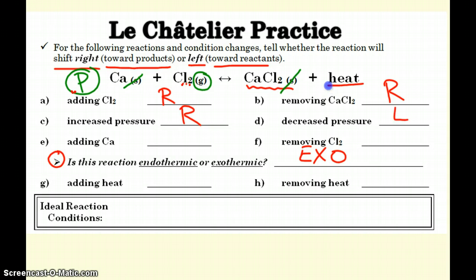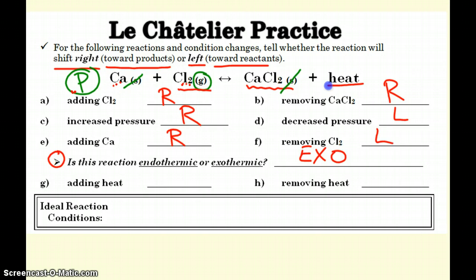Decreasing the pressure has the opposite effect — it's going to shift to the left, because if I take the pressure away, the reaction is going to shift back to the left-hand side to replace it. Adding calcium — it's a reactant, it's an ingredient — it's going to cause it to shift to the right. Removing chlorine — chlorine is a reactant, so if I remove the reactant, I can't make any more products. It's going to come back to the left to reform the missing reactants.